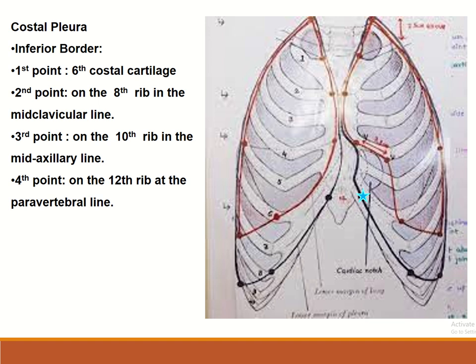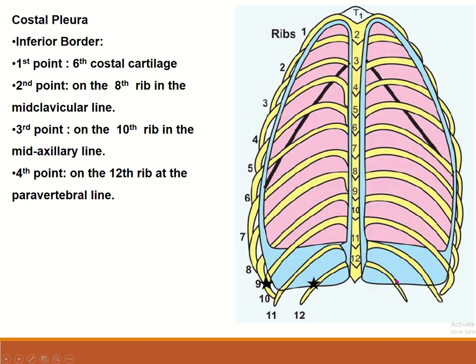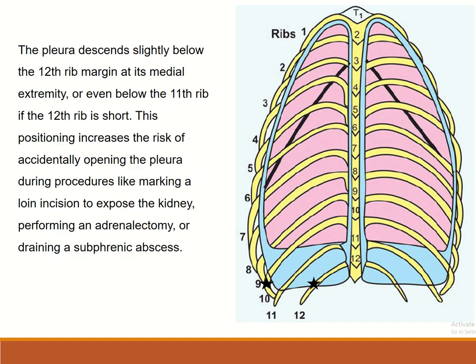The inferior border: first point at the sixth costal cartilage, second point at the eighth rib in the mid-clavicular line, third point at the tenth rib in the mid-axillary line, and fourth point at the twelfth rib at the paravertebral line. The pleura descends slightly below the twelfth rib at its medial extremity, or even below the eleventh rib if the twelfth rib is short.